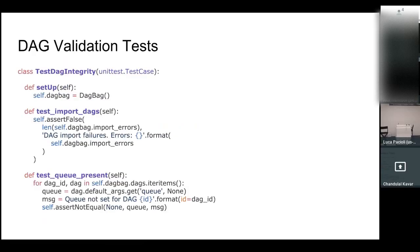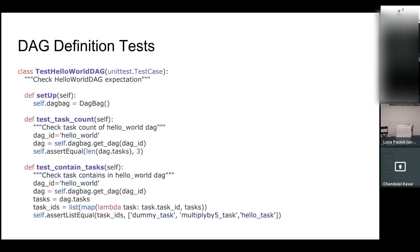To write a DAG validation test, the first test you can see here is 'test import DAGs.' What it does is check from the DAG bag — which contains all DAGs that Airflow has — and verify whether each DAG is parsable in Airflow or not. So you won't see broken DAGs if you have this test. The second test checks that each and every DAG should have a queue as a default argument. If any DAG does not have a queue, this test will fail. This is how you write the DAG validation test — you can add more tests based on your requirements.